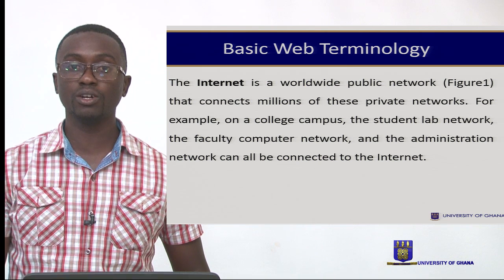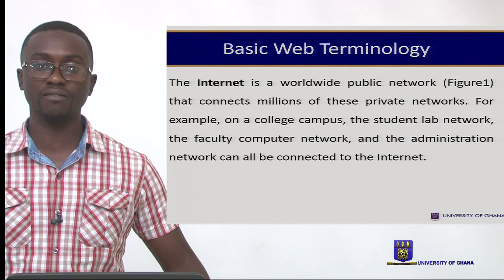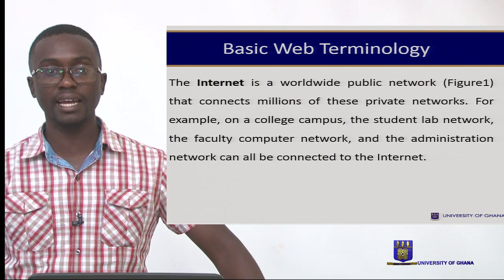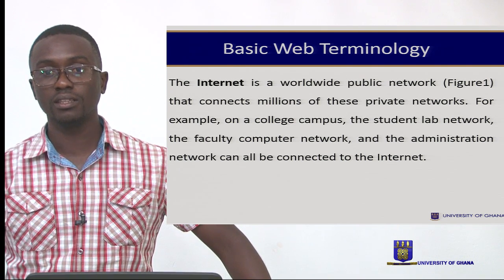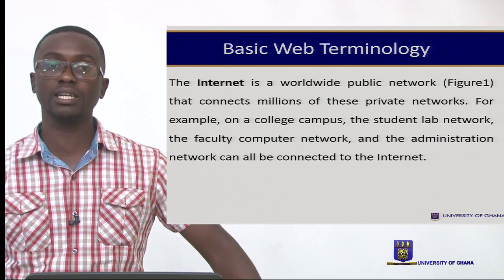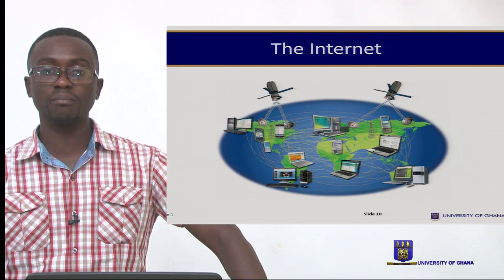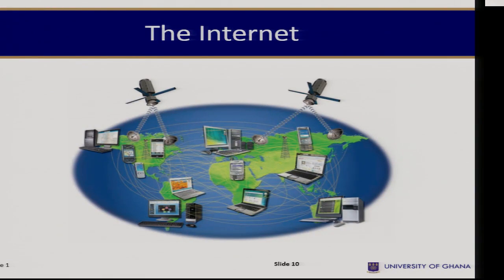The Internet is another term we'll be using frequently during this course. The Internet is a worldwide public network that connects millions of these private networks. For example, on a college campus, the students' lab network, the faculty computer network, and the administration network can all be connected to the Internet. This diagram illustrates the Internet as many interconnected private networks — and this is what we call the Internet.